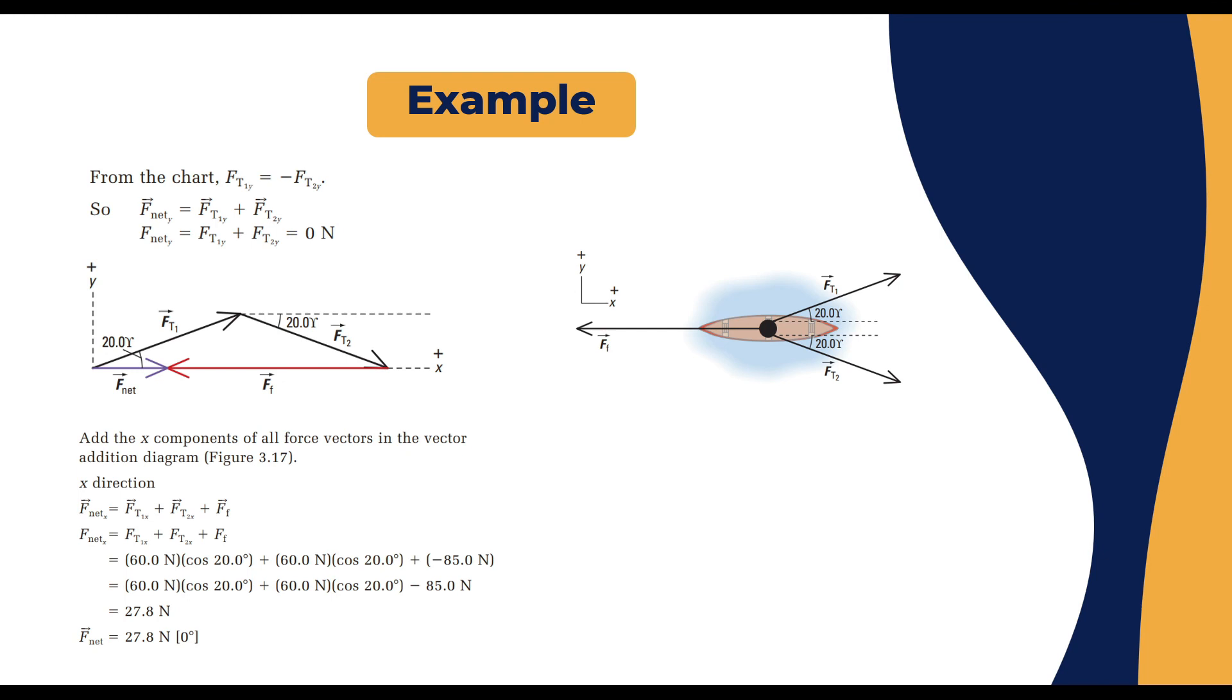From the chart again we can draw the forces. We have F_friction going to the negative side of the x-axis. We have F_T1 with 20 degrees from the x-axis and we have F_T2 which is 20 degrees from the x-axis but pointing downward. When we analyze the components we can say that F_net_x equals F_T1x plus F_T2x plus F_friction. The F_net_x would be, in this case, for F_T1x would be 60 cosine 20, for F_T2x equals 60 cosine 20 as well, for the F_friction we know it is 85 in the negative direction. If you find the final numbers for each of those mathematical expressions, the final answer would be F_net equals 27.4 newtons with zero degrees angle.